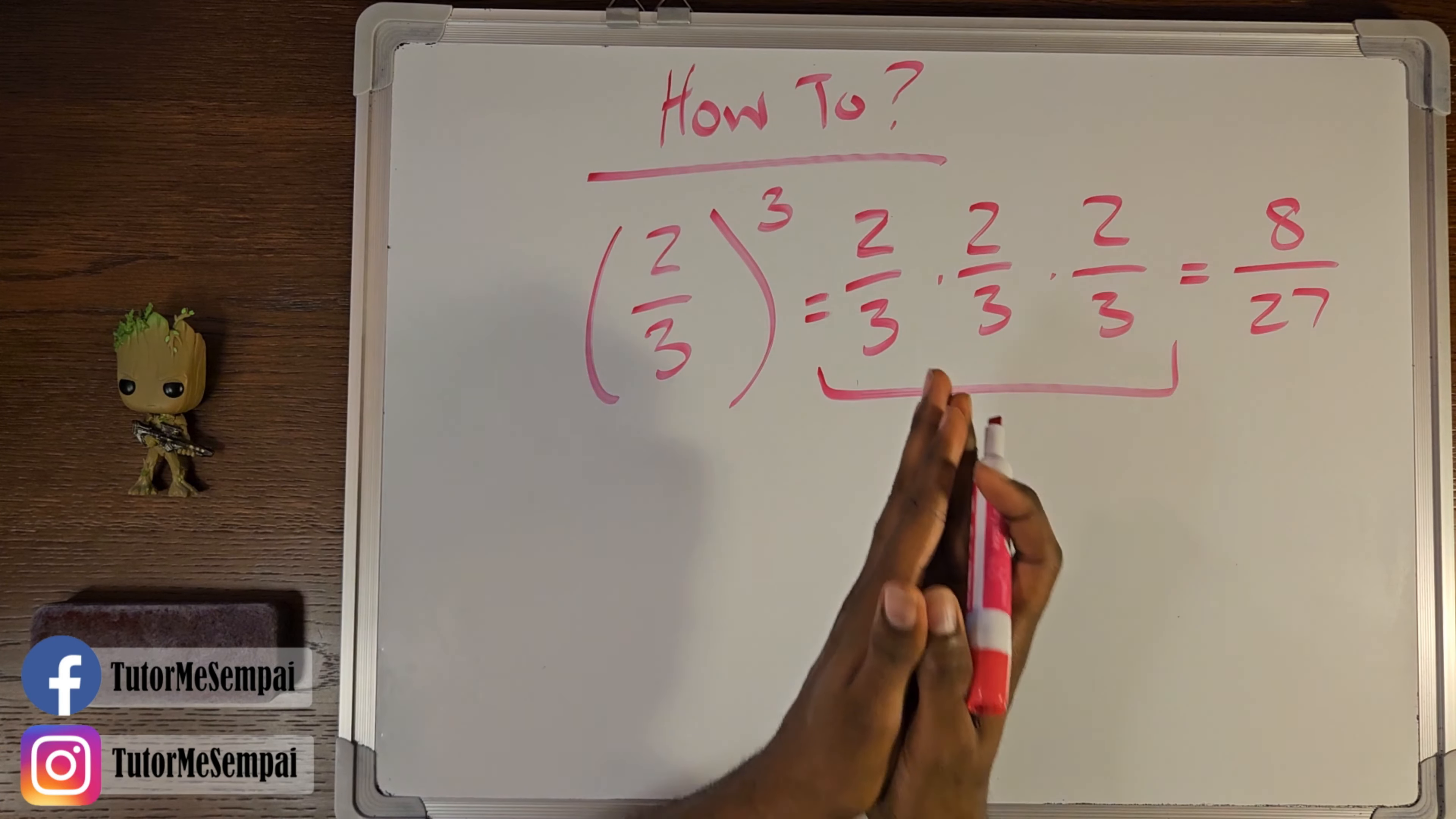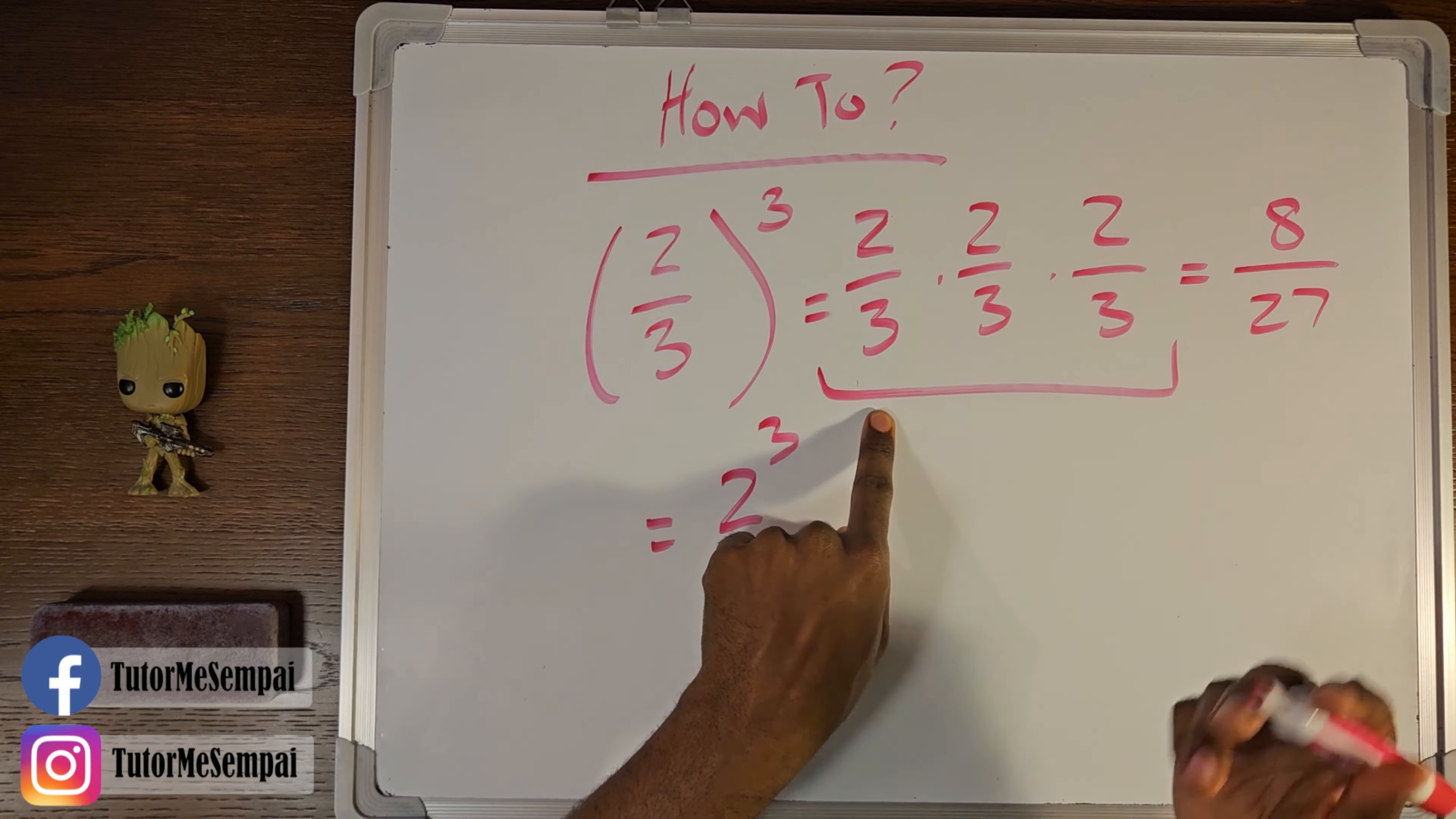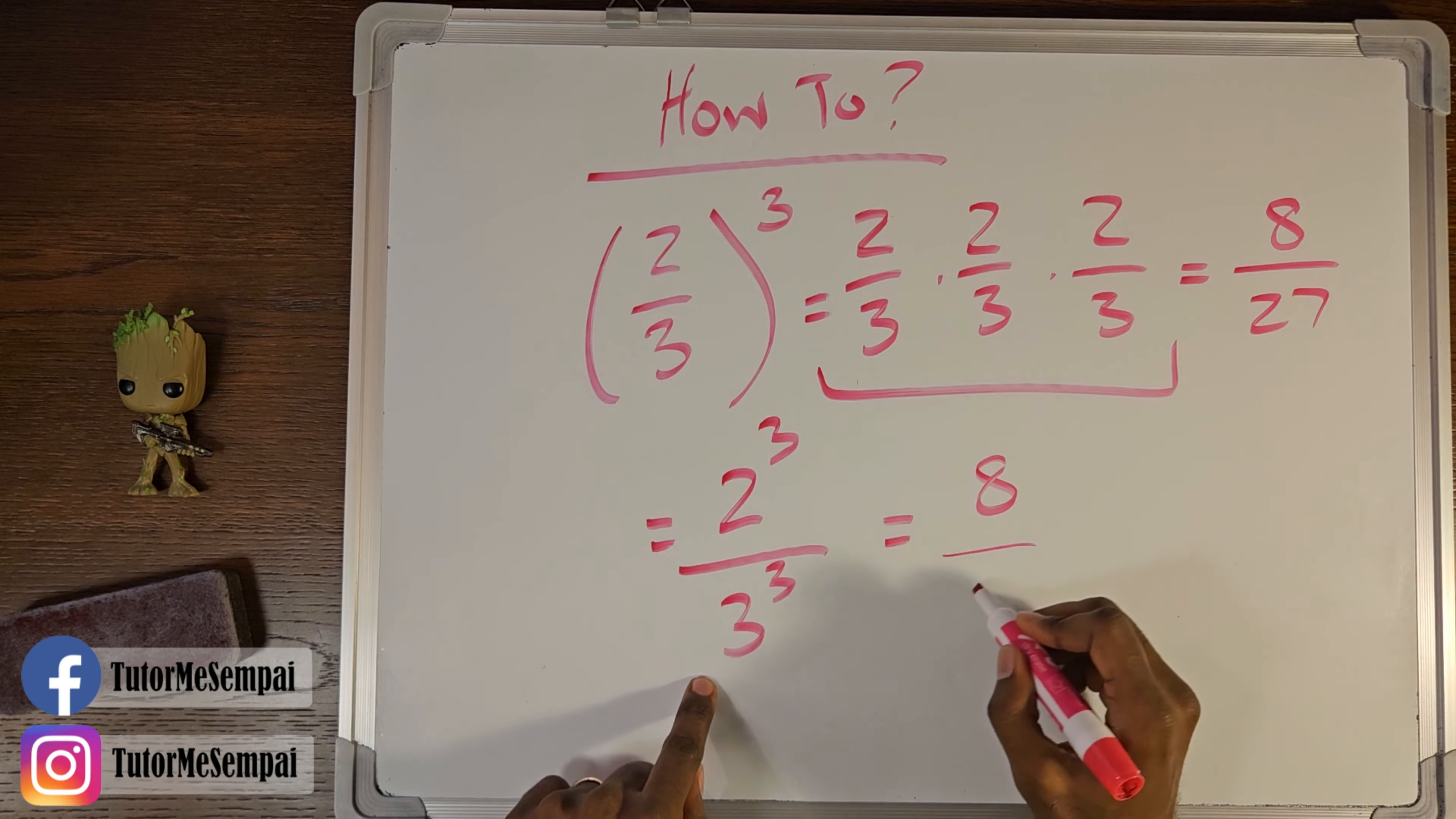Now if you look at this middle step, what is another way of writing this with exponents? Well, how many twos do we have? We have three twos, so if you were to write this with exponents, you can say that this is actually going to equal two to the third power. How about our denominator? How many threes do we have? The same amount—three. So we can actually write three to the third power as well. So if you're really familiar with your exponents, you may know just by looking at that two cubed is going to be eight and that three cubed is going to be 27.